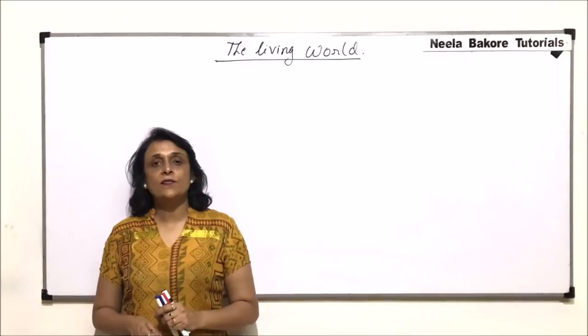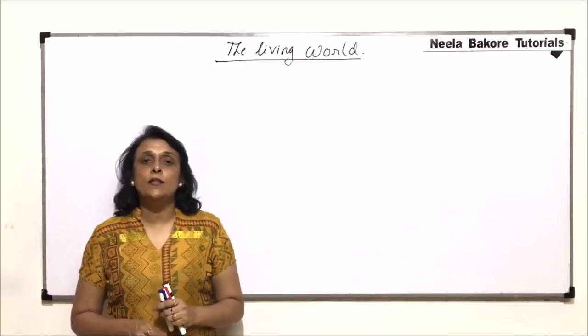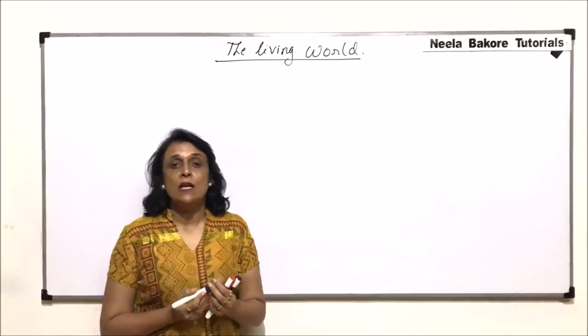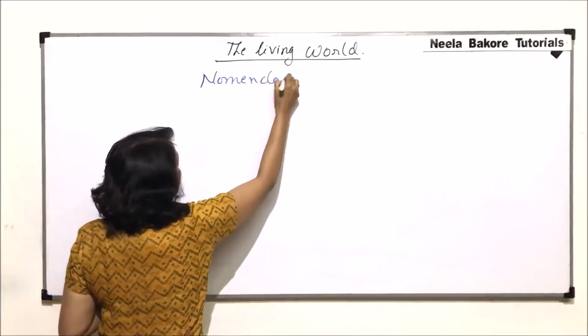In the previous part we were talking about the characteristic features of living organisms. There is a wide variety of living organisms which exist, so we need to identify them, name them, and arrange them in a proper manner. We will first be talking about the naming system, that is the nomenclature.